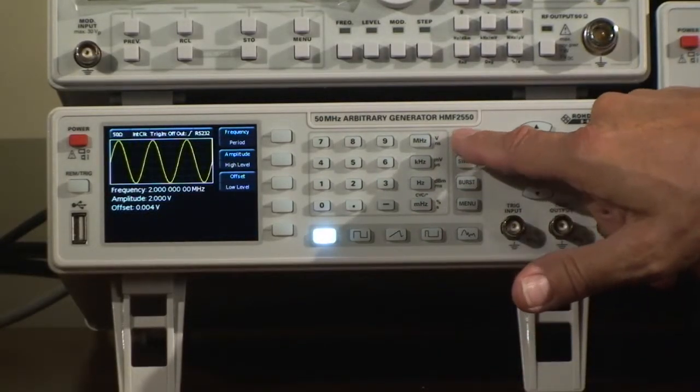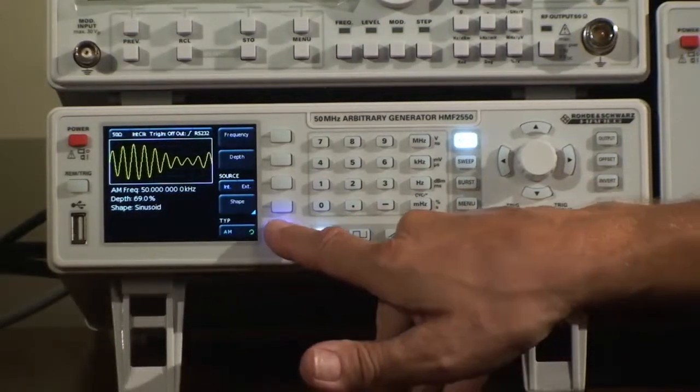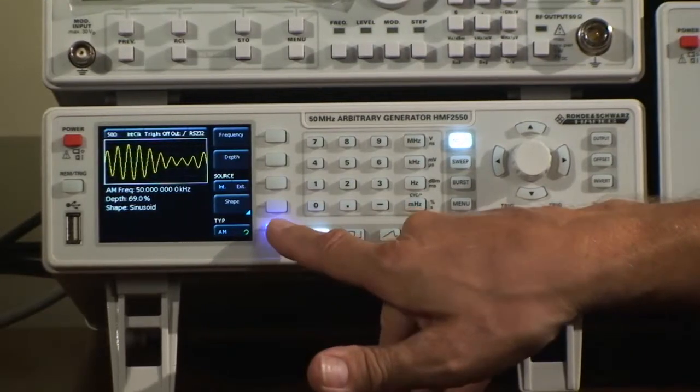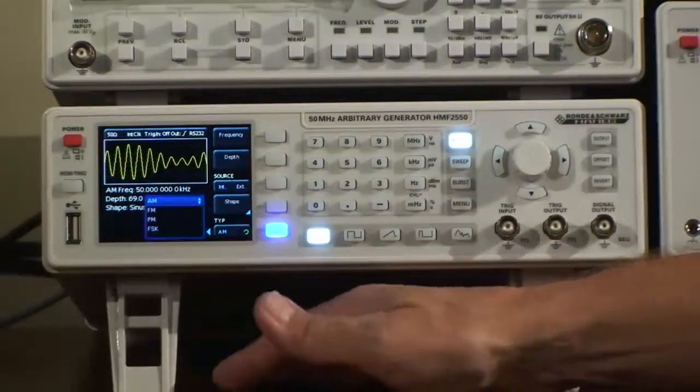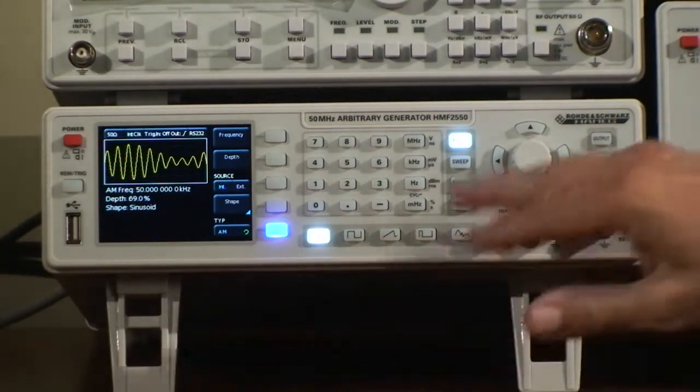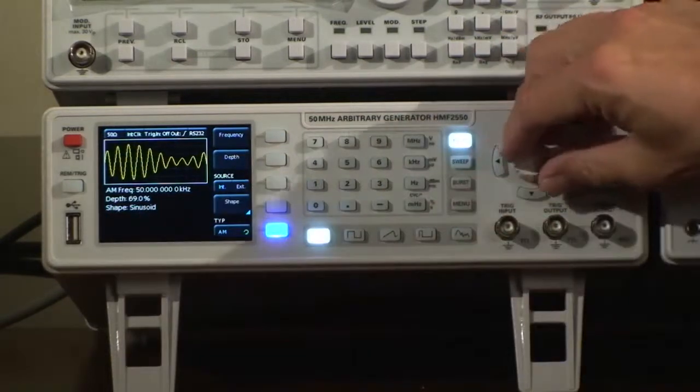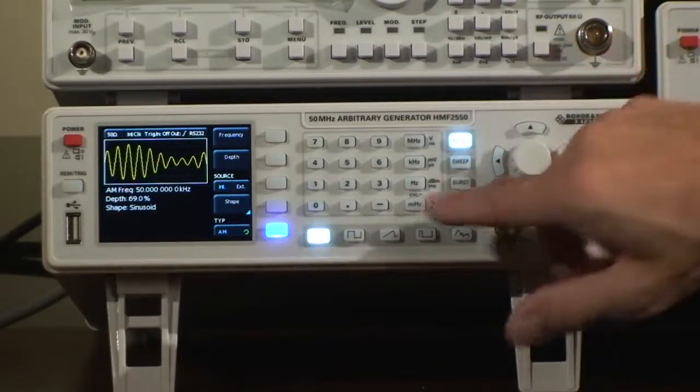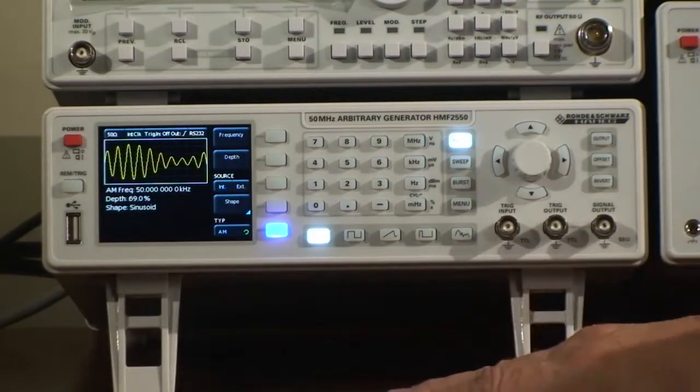Selected here by pressing this button I now have the possibility of AM, FM, phase modulation and frequency shift keying. And this button here gives me the possibility to adjust my AM depth. And I can now set AM or I can set FM accordingly.